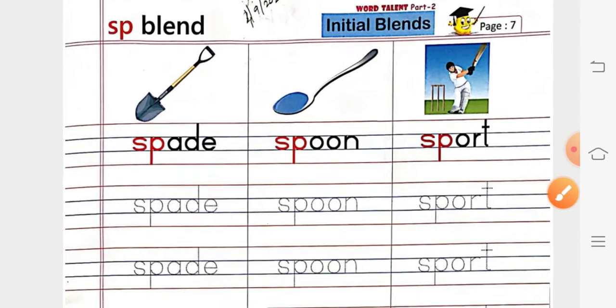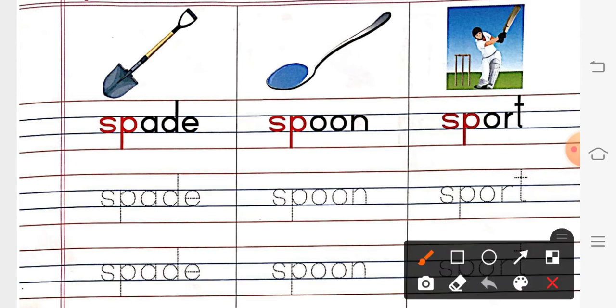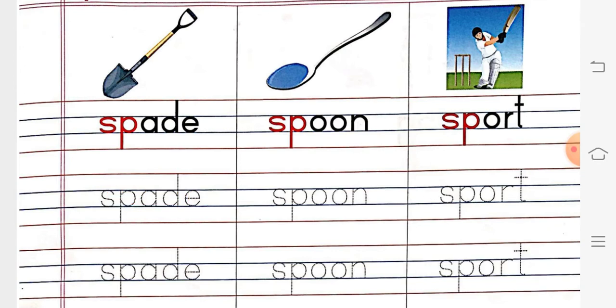Let us write today. Hold your pencils between your two fingers. That is your first finger and your thumb finger. And let us begin to write. First one is Spade. That is S, P, A, D, E. What is it? Spade.